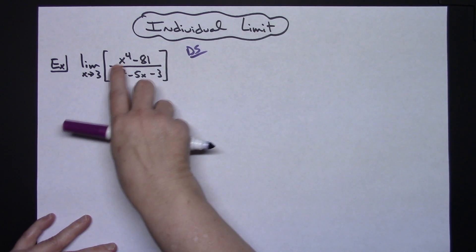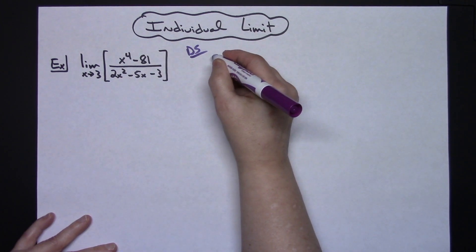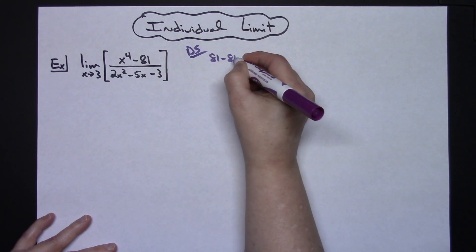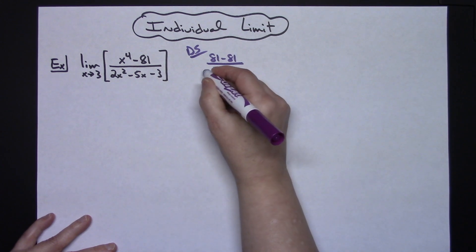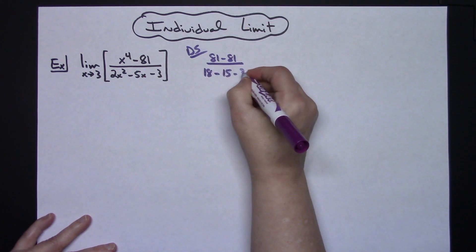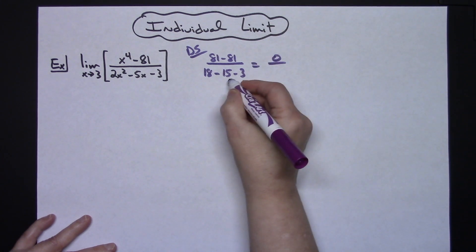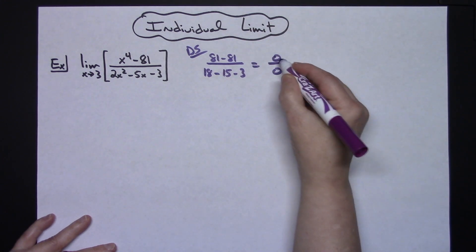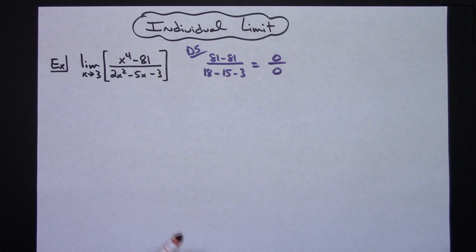I'm going to take my 3 and do a direct substitution. 3 to the fourth power gives me 81 minus 81 on the top. Plugging in 3 here gives me 18, then plugging in 3 gives me minus 15, and then minus 3. That gives me a 0 on top and a 0 on the bottom — that is the indeterminate form, which tells you that you need to take another approach to the limit.